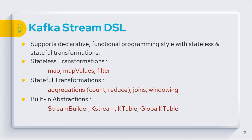Stateless transformation methods include map, mapValues, filter, etc. — if you're familiar with the Java Stream API, you can relate to these methods since they function the same way. Stateful transformation methods include aggregation methods like count and reduce, as well as joins and windowing. The DSL provides built-in abstractions: StreamBuilder for defining a topology, KStream for working with record streams, KTable for working with changelog streams, and GlobalKTable for working with global changelog streams.